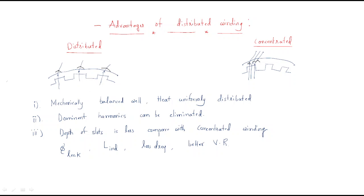First point: the distributed winding is mechanically balanced well. Mechanical balance is equal because these three slots have three windings. In concentrated winding, only one slot has three windings. Heat is uniformly distributed in the distributed winding. Whenever current flows through the windings, heat is induced, but in distributed winding the heat is equally distributed. In concentrated winding, heat is available in only one slot, which is not equally distributed and may cause damage.